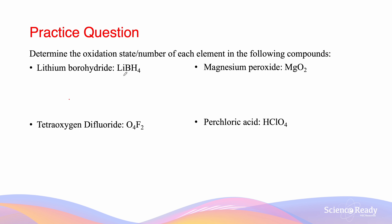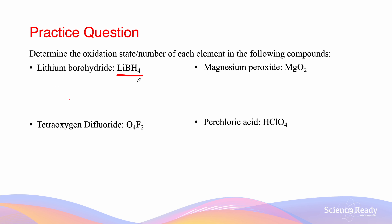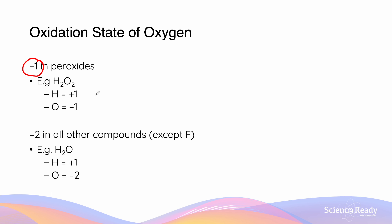Here we have some trickier examples. The first example is lithium borohydride (LiBH₄). Because hydrogen is in combination with a metal and boron, it is going to have an oxidation state of −1. There are four hydrogens, giving −4 total. Lithium, because it is a group one metal, is going to have an oxidation state of +1. Thus, boron is going to have an oxidation state of −(−4 + 1) = −(−3) = +3. In the next example, magnesium is always going to have an oxidation state of +2 because it is a group two metal. As a result, oxygen must have an oxidation state of −1, which is consistent with the idea that oxidation states of oxygen are −1 in peroxides.